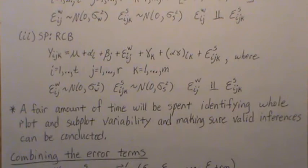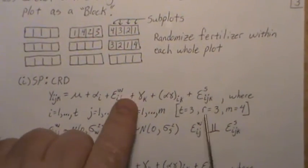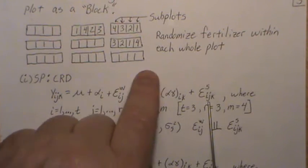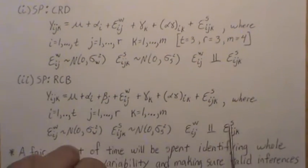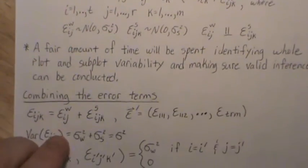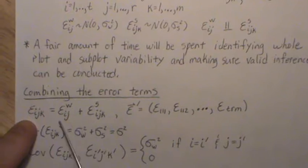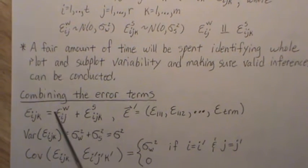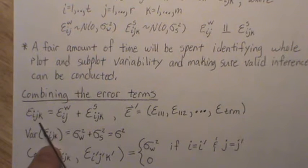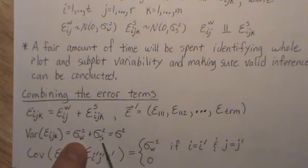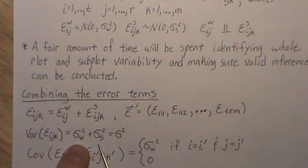What is commonly done is that the error terms are often combined into one, so we call it epsilon_ijk. But really it's the addition of the whole plot error and the subplot error. The variance of epsilon_ijk is simply the variance of the whole plot error plus the variance of the subplot error — because there's no covariance since they're independent — and we generically call that sigma squared.